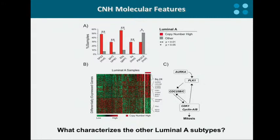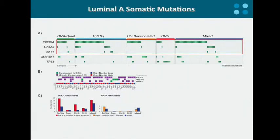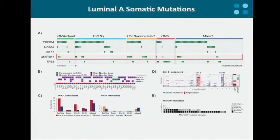At this point, we wanted to see if we could have a similar comprehensive picture for the other luminal A subtypes. Looking at somatic mutation, we saw that the most frequently occurring mutations in luminal A tumors — specifically PIK3CA and GATA3 — are enriched in tumors that have low levels of copy number alteration. In particular, GATA3 is highly recurrent in tumors that present the 1Q gain / 16Q loss pattern characterizing roughly 30% of luminal A tumors. This enrichment is even stronger when looking specifically at hotspot mutations in PIK3CA and GATA3. We also saw a strong association between MAP3K1 mutation and wide-arm events on chromosomes 8 and 16, characterizing the chromosome 8-associated cluster.